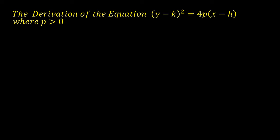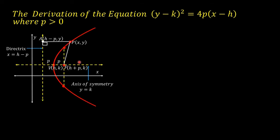Now for the derivation of (y − k)² = 4p(x − h), where p > 0. Looking at the figure: this is the y-axis and x-axis. This is a parabola opening to the right with vertex at point h, k. The focus has coordinates (h + p, k). The directrix has equation x = h − p. Point A is on the directrix with coordinates (h − p, y). The axis of symmetry has equation y = k.